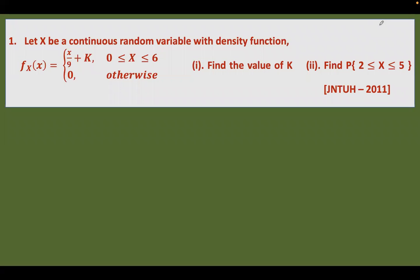Let us take the first question. The question says: let X be a continuous random variable with the density function given as f(x) = x/9 + k, defined between the values 0 to 6 and 0 otherwise. We need to find the value of k and also find the probability of the random variable defined between 2 to 5. It was asked in JNTU-H in 2011.